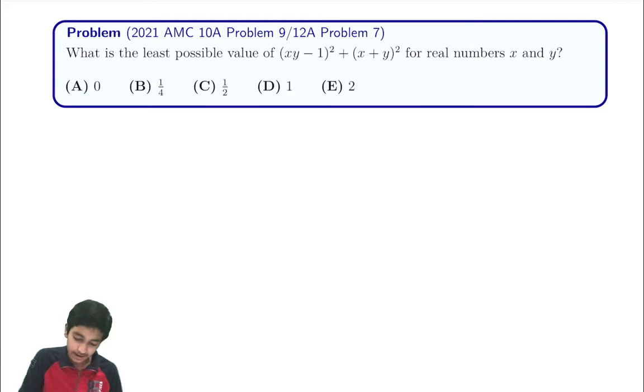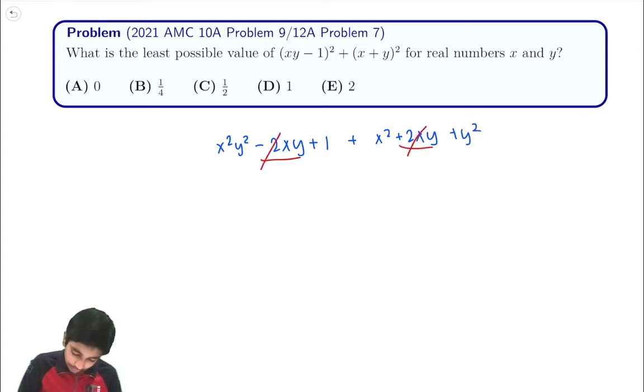So the natural thing to do is just to expand. So we just expand to get x²y² minus 2xy plus 1, because we're just expanding this whole thing out, and plus x² plus 2xy plus y². So you can see that minus 2xy and 2xy, they cancel. And this gives us, we're just left with x²y² + x² + y² + 1.